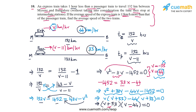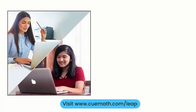The answer is that the speeds of the two trains are 44 kilometers per hour and 33 kilometers per hour. As an exercise, plug these values back into the situation given to verify that the answers align with the data points in the problem statement.